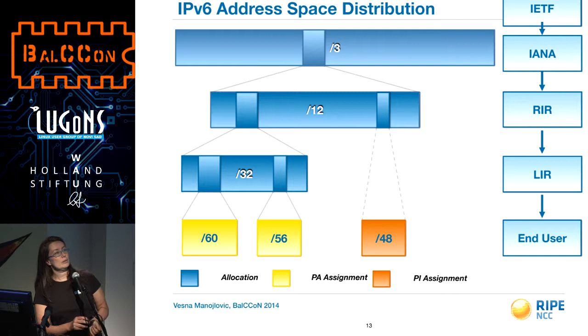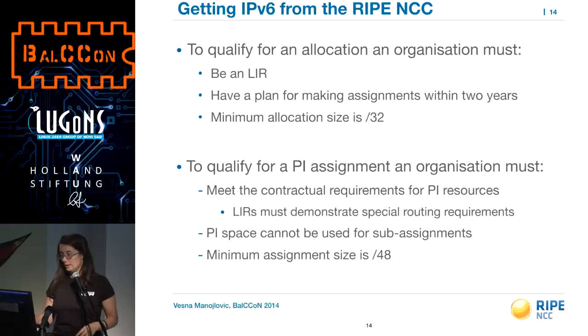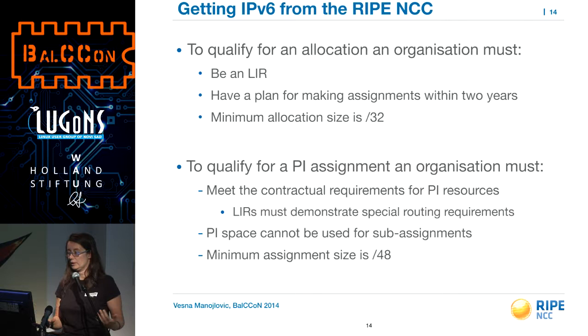Why do you want V6? Because there's no more V4. How do you get V6? It's really easy. You get it from your friendly RIR, which is RIPE NCC in this region. You can get a very large allocation — the minimum allocation size is slash 32, but if you ask for slash 29, we will also give you slash 29. From that, if you are a member of RIPE NCC, you can make assignments to yourself and to your customers, the end users. End users can also ask for provider-independent assignment.